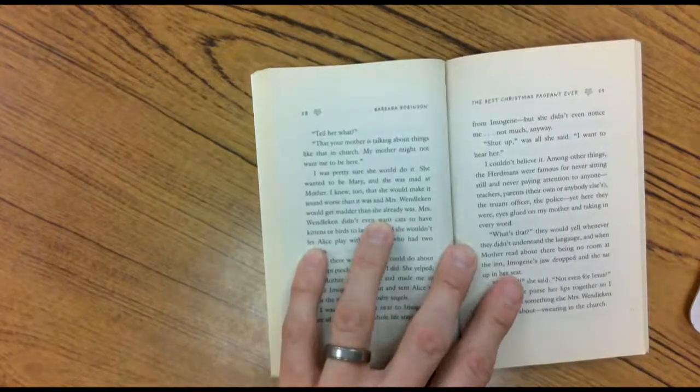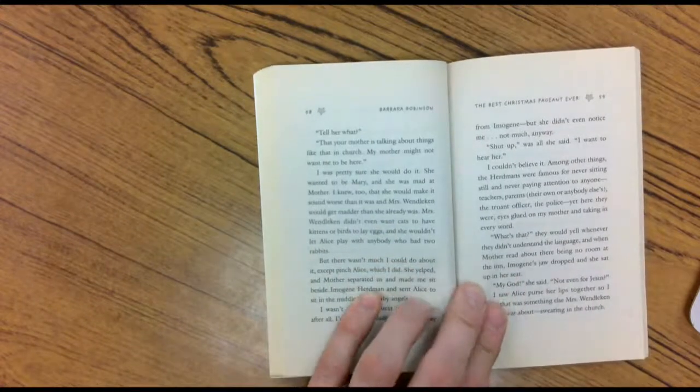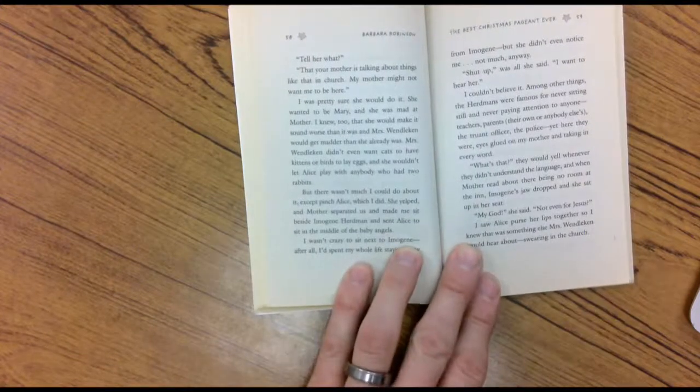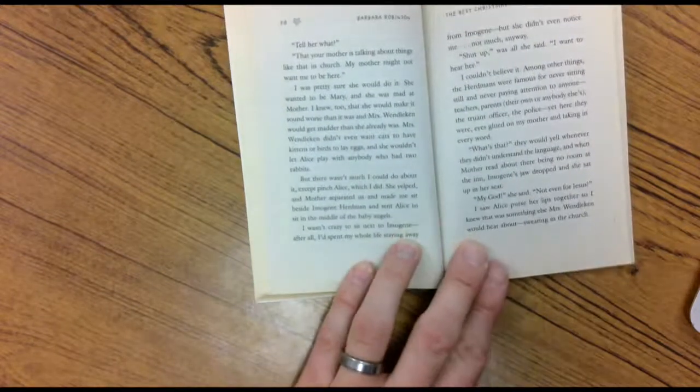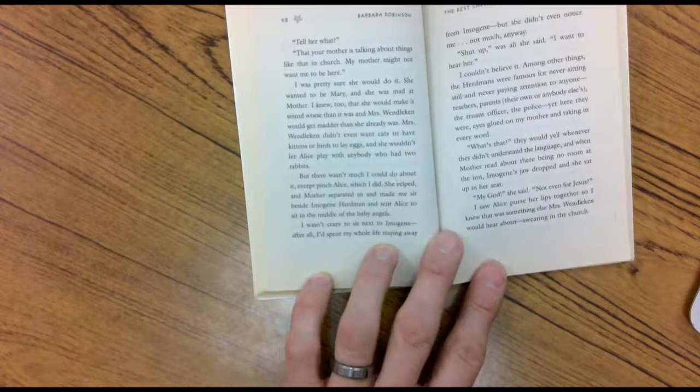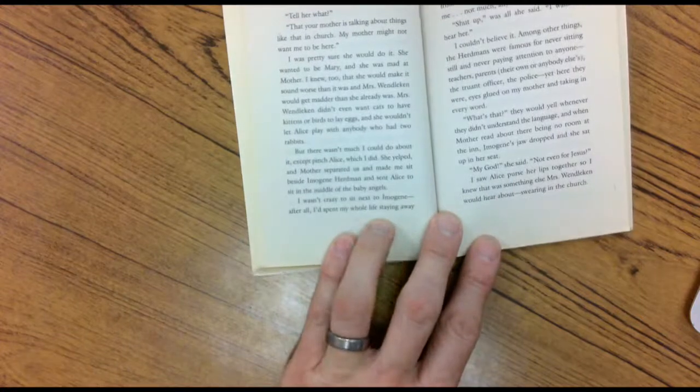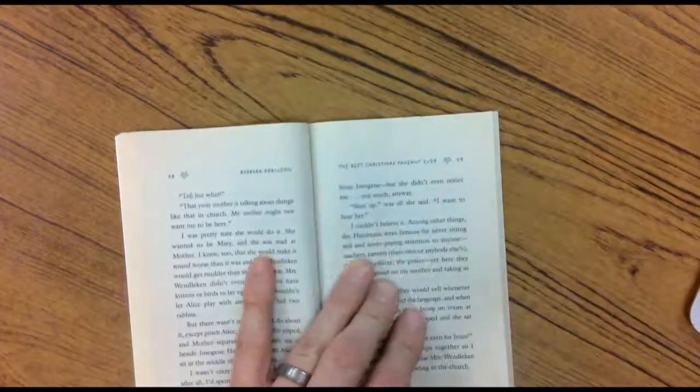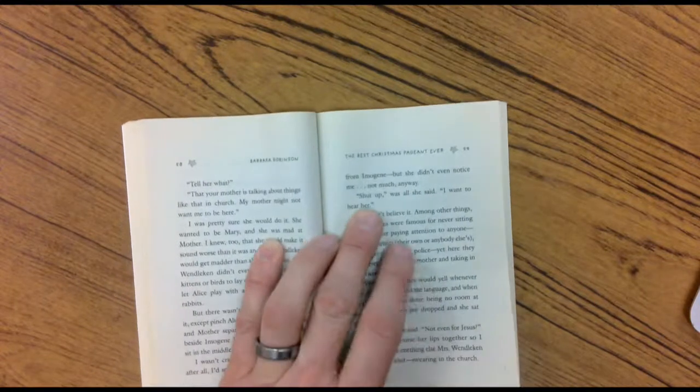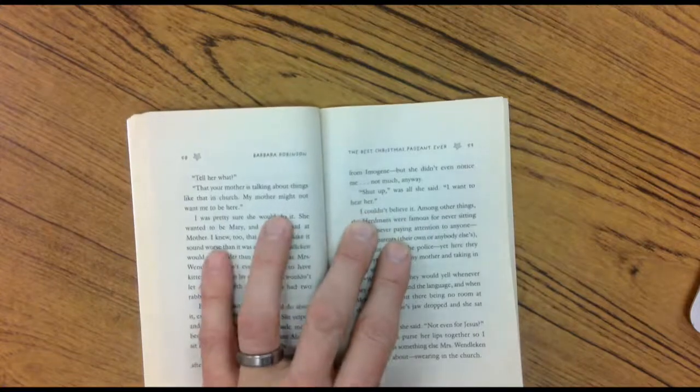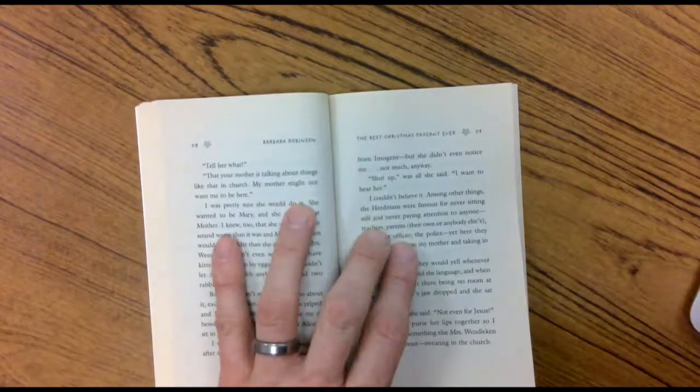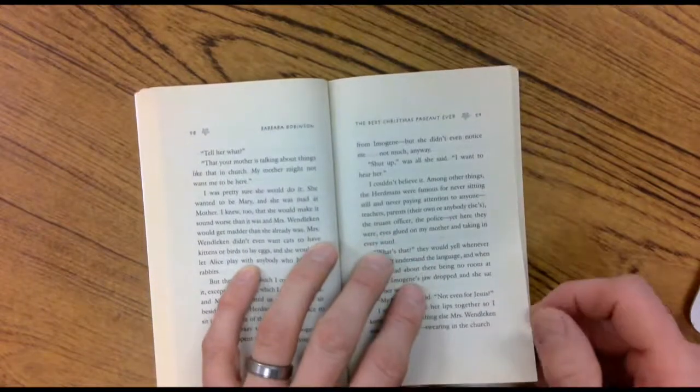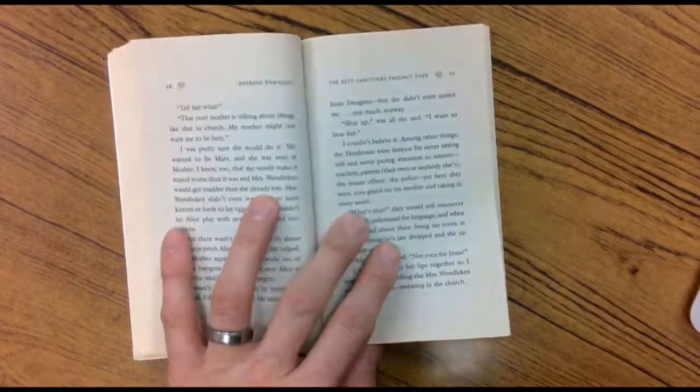Mrs. Wendelkin didn't even want cats to have kittens or birds to lay eggs. And she wouldn't let Alice play with anybody who had two rabbits. But there wasn't much I could do about it except pinch Alice. Which I did. She yelled, Ouch! And Mother separated us. She made me sit beside Imogene and sent Alice to sit in the middle of the baby angels. I wasn't crazy to sit next to Imogene. After all, I spent my whole life staying away from Imogene. But she didn't even notice me. Shh! Be quiet! What was that she said? I wanted to hear her! This is Imogene talking. I couldn't believe it! Among the other things, the Herdmans were famous for never sitting still and never paying attention to anyone. Teachers, parents, their own, or anybody else's. The truant officer, the police. Yet here they were, eyes glued on my mother and taking in every word.